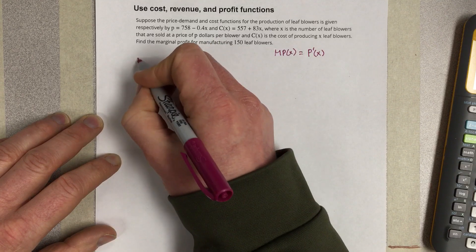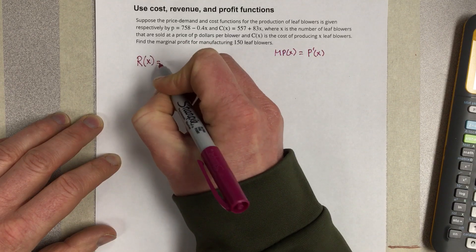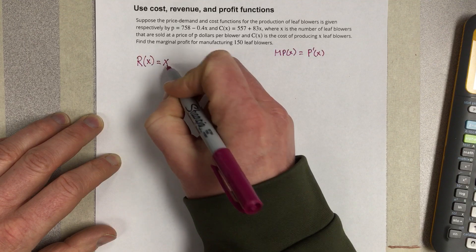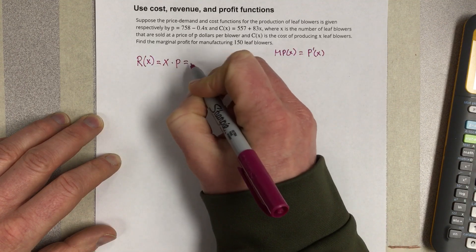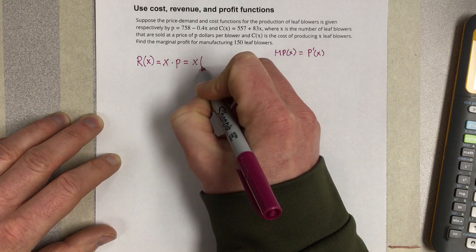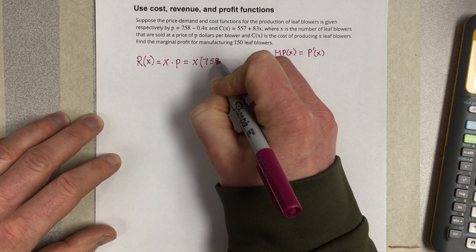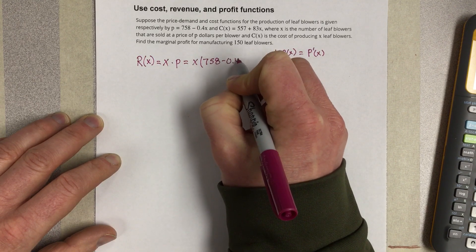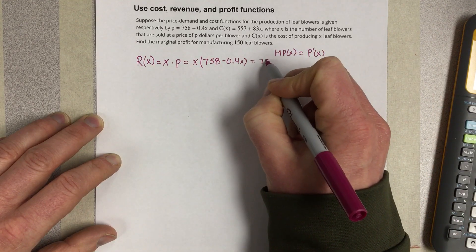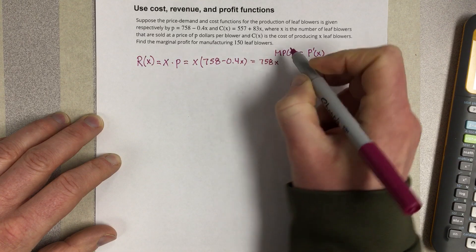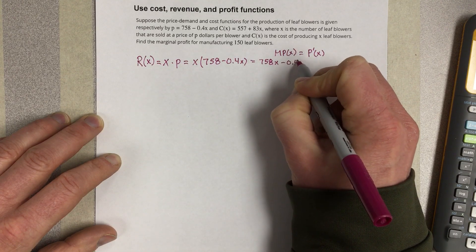So let's first find a revenue equation, and the revenue equation is going to equal the number of units you sell times the price. Well, that would be x times 758 minus 0.4x, which is equal to 758x minus 0.4x squared.